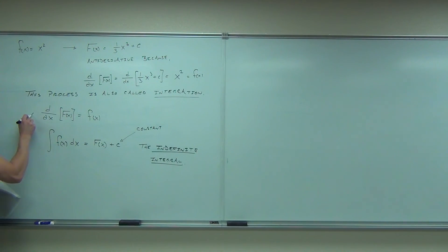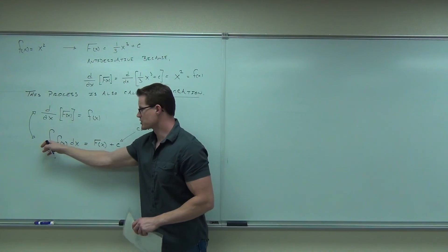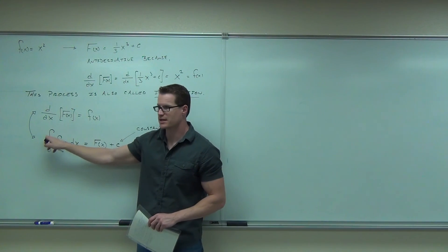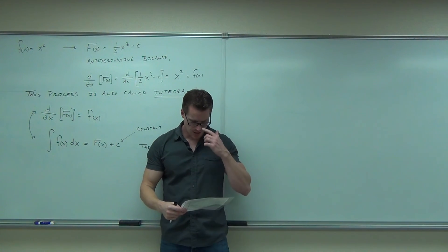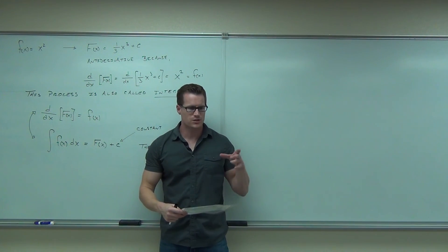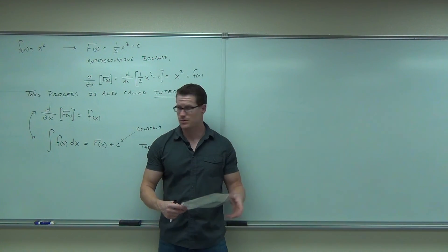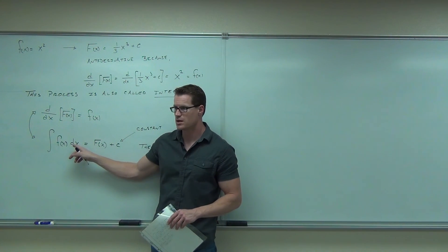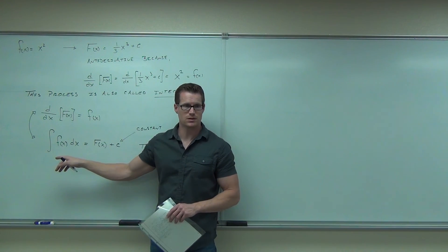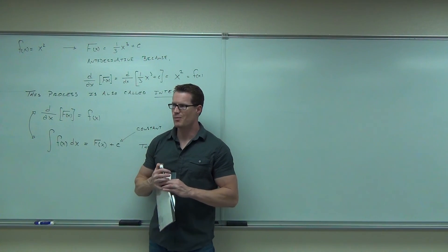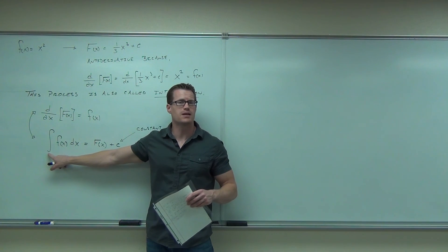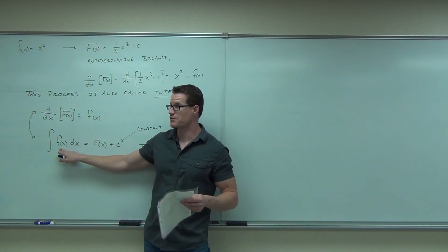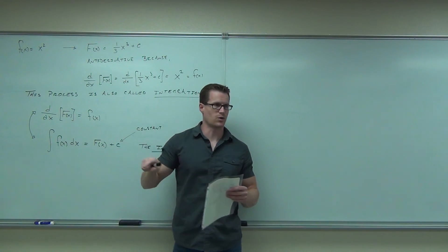These two forms say exactly the same thing — they're interchangeable. This one says take a derivative of your anti-derivative, you get the function. This says find the integral of your function — find the anti-derivative of this. That's the whole idea. Why is the dx there? That dx tells you what you're taking the integral with respect to, so what your variable has to be. This dx right here says I'm taking this with respect to x, so that variable has to be x. If it's not, you can't do it. Basically I want to get down the names and the notation — that's an integral symbol.